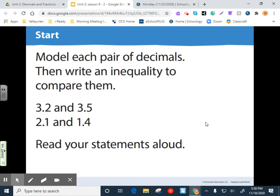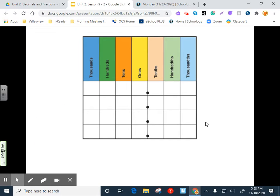Alright, so speaking of cold and warming up, let's go over our warm-up for today. It says model each pair of decimals and write an inequality to compare them. So we are going to compare 3.2 and 3.5, and then we're going to compare 2.1 and 1.4. Okay, so let's do that. We can actually put them both on here.